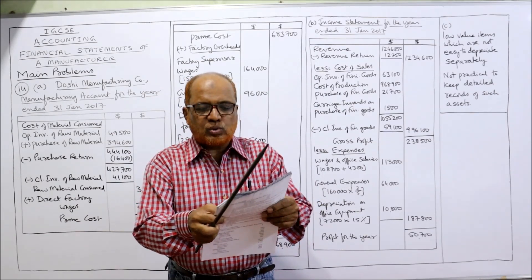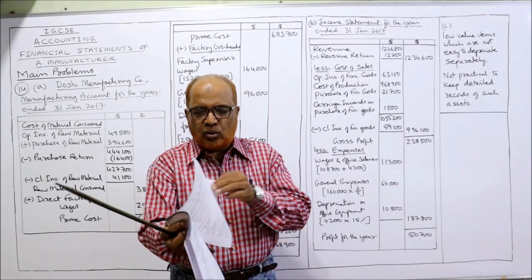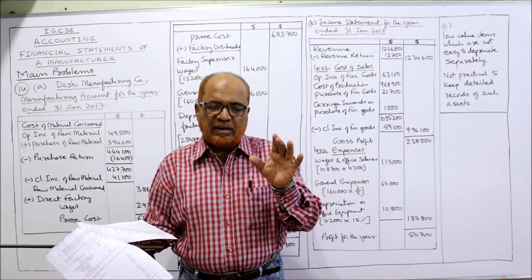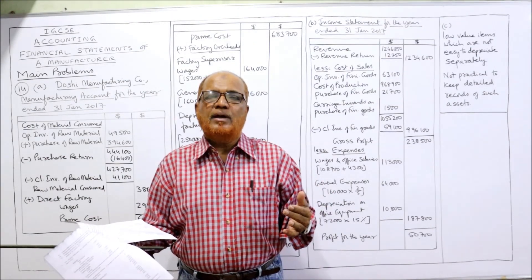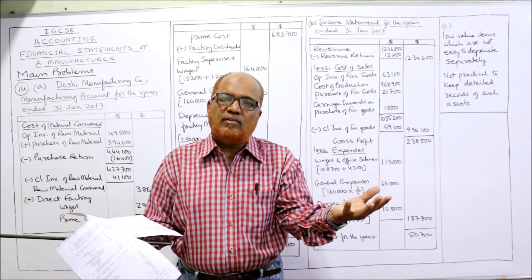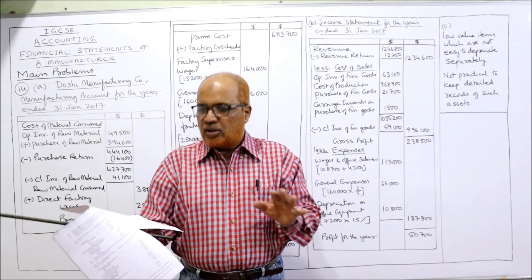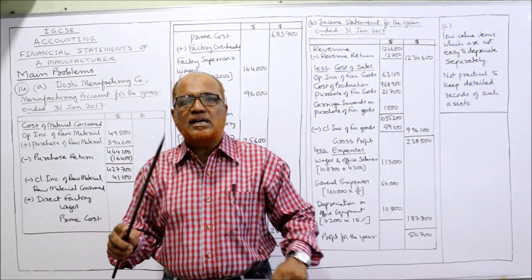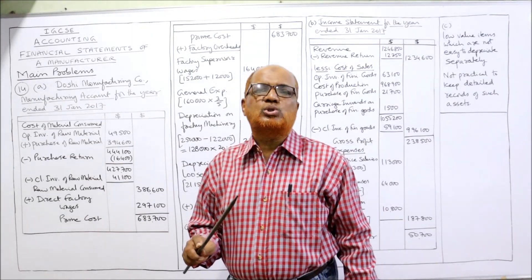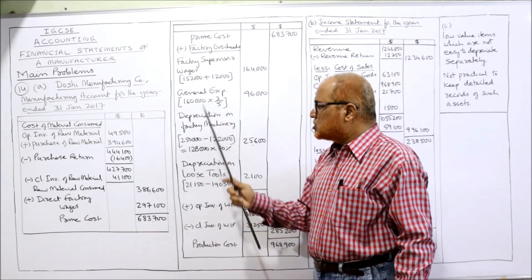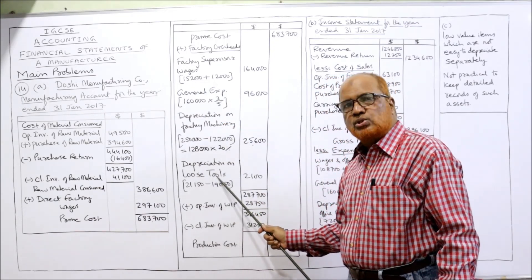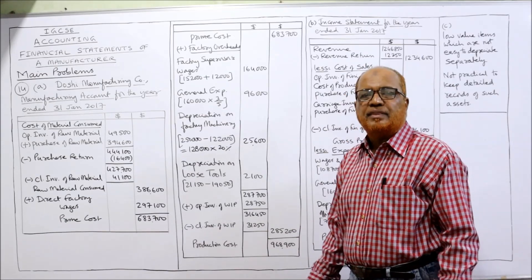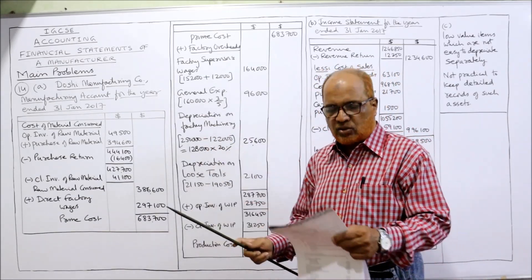For loose tools, we apply the valuation method. At the end of the year we find out what the value is; at the beginning of the year we know the value, and the difference will be the depreciation. Beginning value is 21,150 and end value of loose tools is 19,050. The difference is the depreciation: 21,150 minus 19,050 equals 2,100. That is the depreciation of loose tools, and it will be taken under factory overhead.